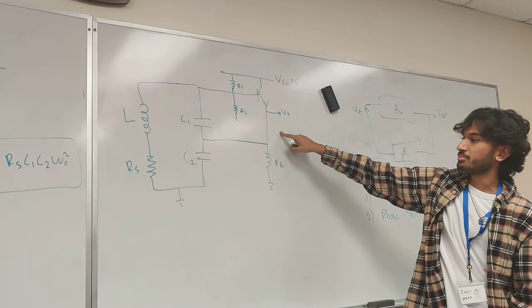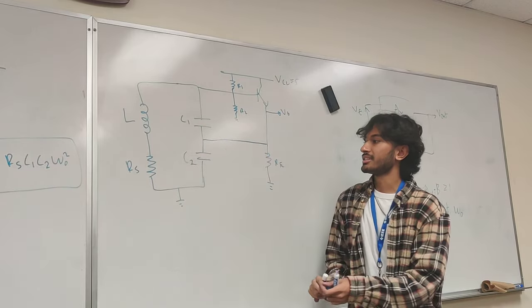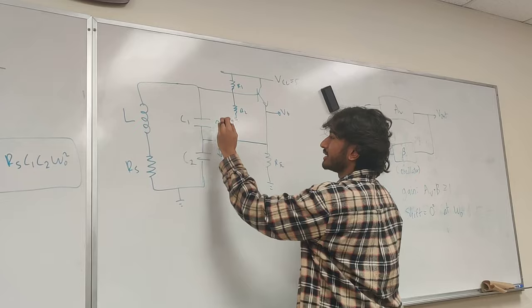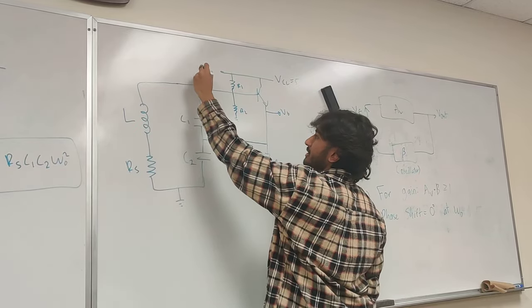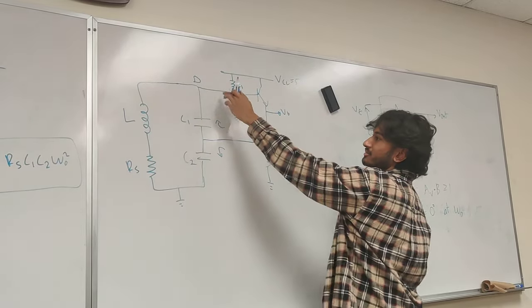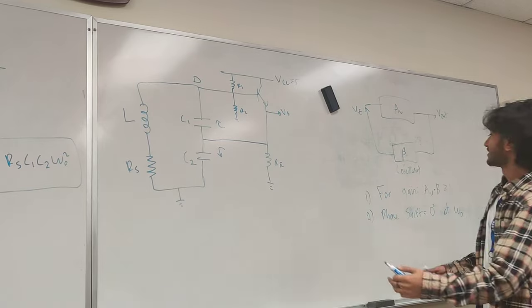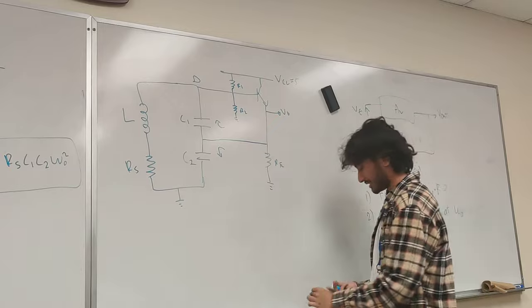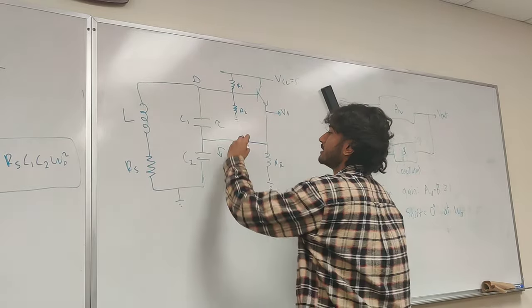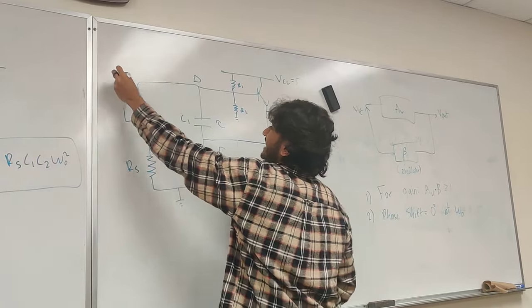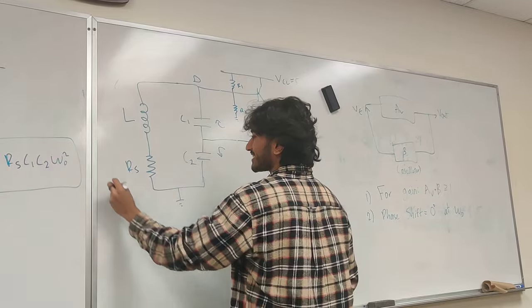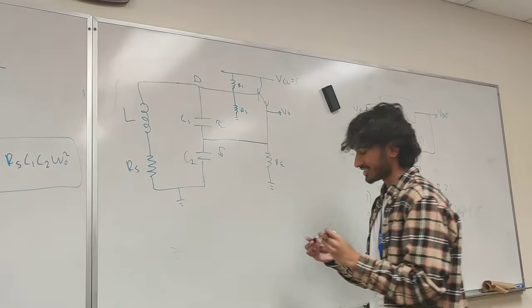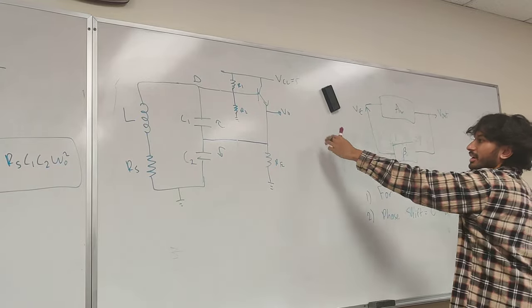We're going to take some of the output and feed it back through this network. This network is going to process it down this way and up this way, and it's going to have some resulting change over here that gets fed back to our input. So call this our oscillator, our feedback network, and our main amplifier here.